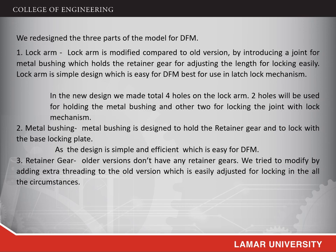The first redesigned part is the lock arm. The lock arm is modified compared to the old version by introducing a joint for the metal bushing, which holds the retainer gear for adjusting the locking length easily. The lock arm is a simple design which is easy for DFM and best suited for the latch lock mechanism. In the new design, we made a total of four holes in the lock arm — two holes for holding the metal bushing and the other two for locking the joint with the lock mechanism.